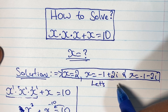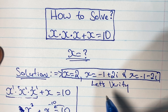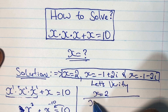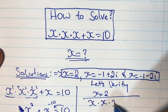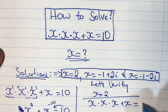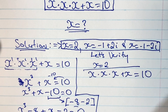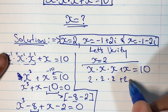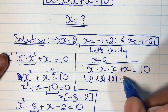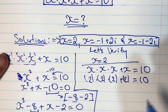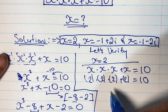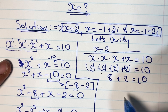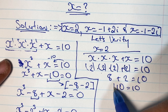We can verify our real solution by substituting x equals 2 back into the original equation: x times x times x plus x equals 10. Substituting, we have 2 times 2 times 2 plus 2. Multiplying, 2 times 2 times 2 gives us 8, and 8 plus 2 equals 10. Our real solution x equals 2 is confirmed to be true.